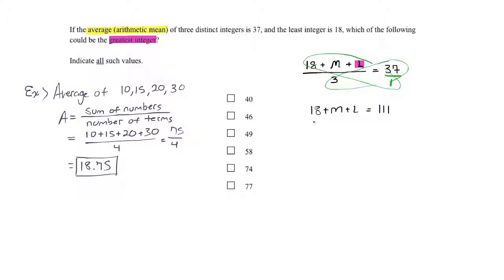Okay, now what can I do? In one step, I could subtract 18 to start getting the numbers together. Now I have this expression M plus L equals 93.